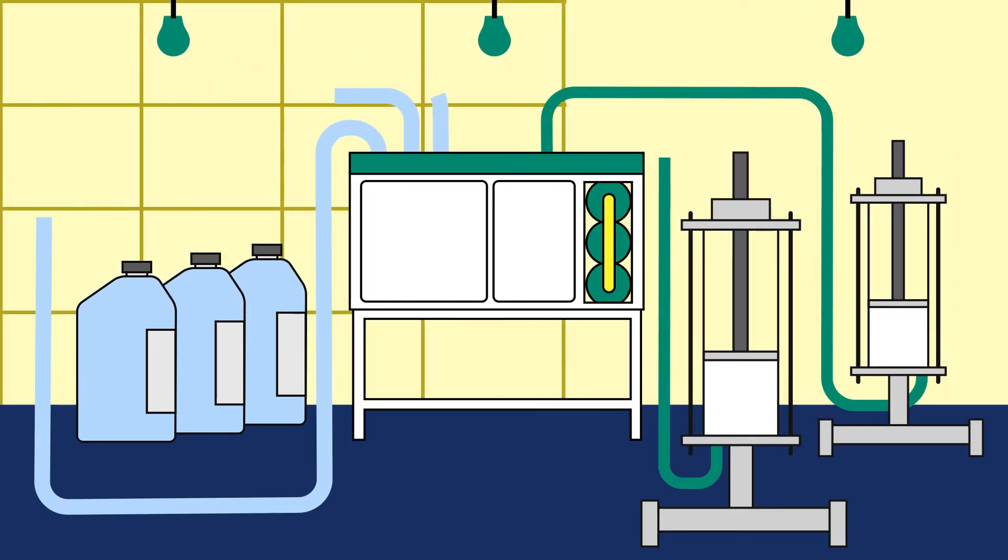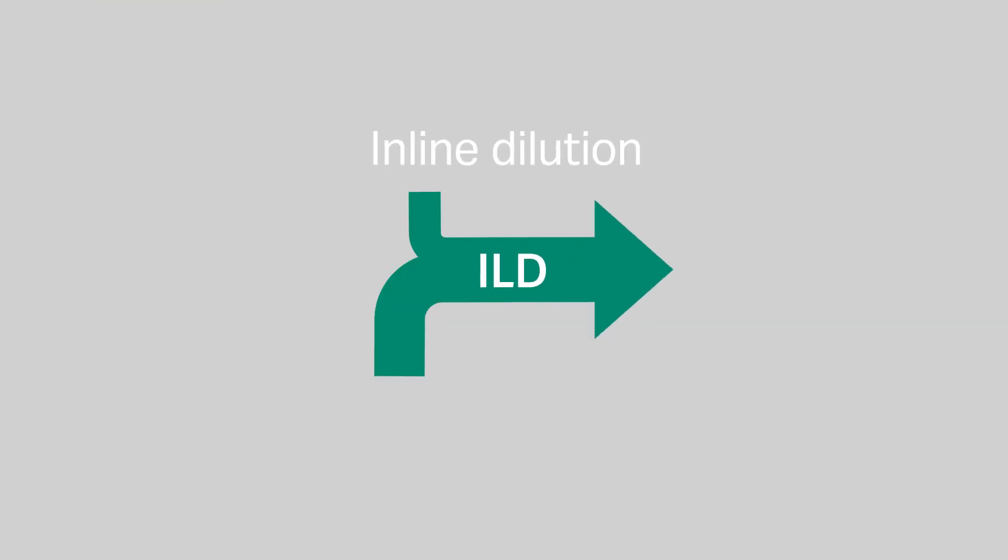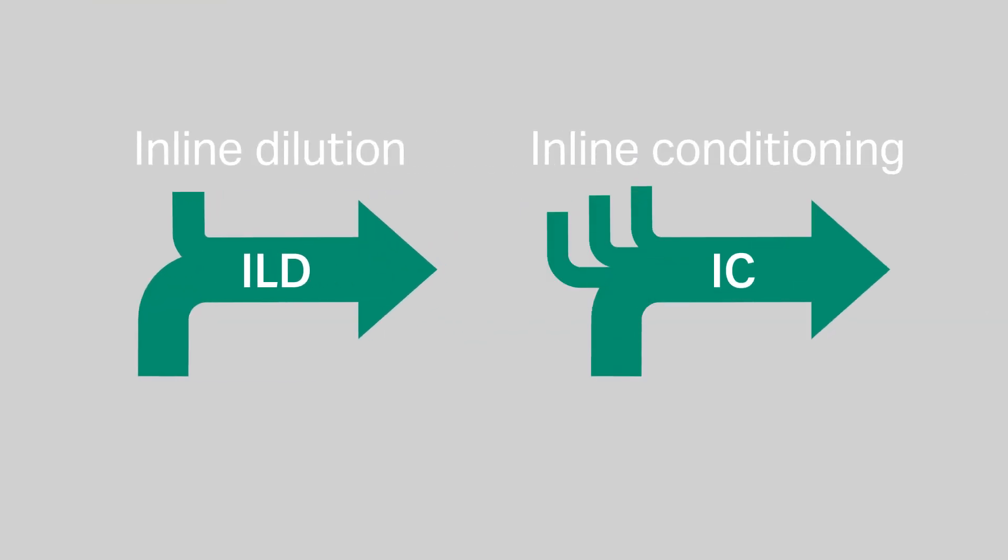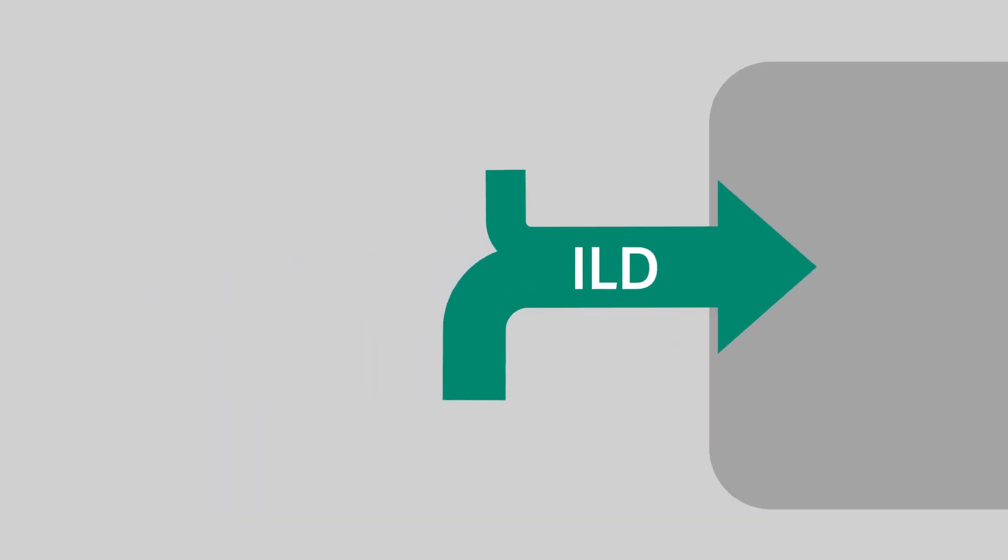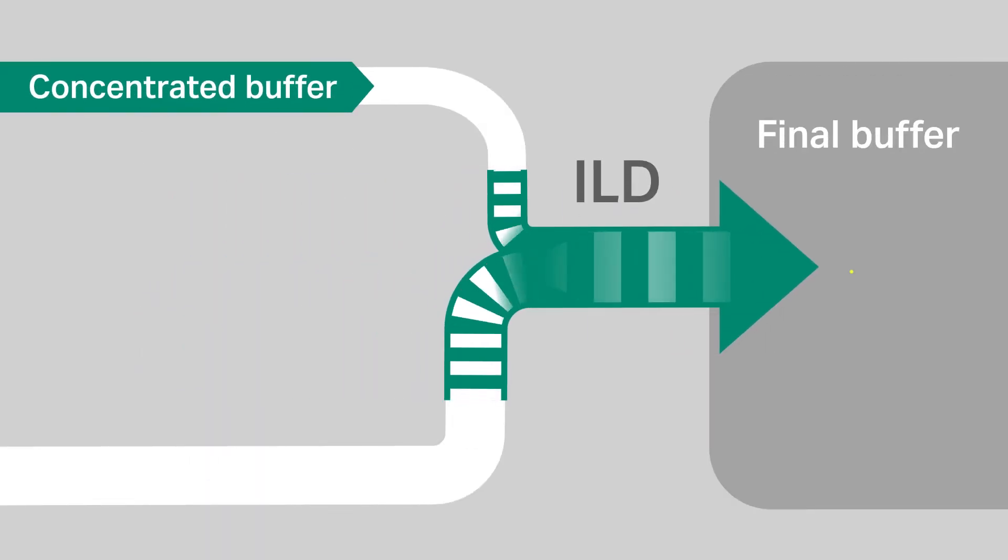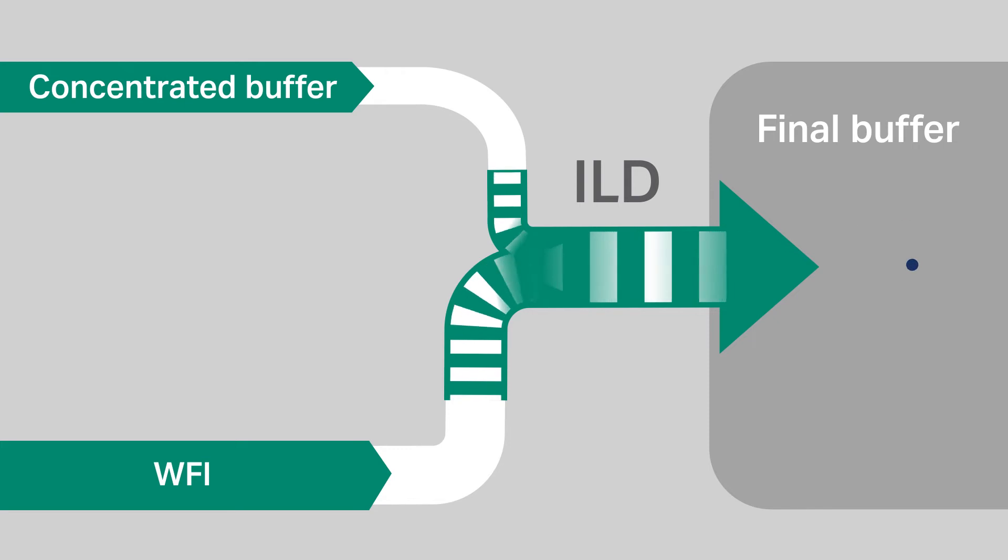Or you can automate your downstream on-site process using inline dilution or inline conditioning technologies. With inline dilution, each buffer is prepared as a concentrate and then diluted by water.